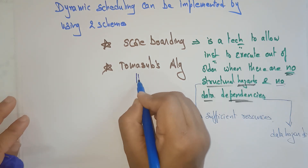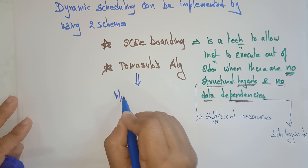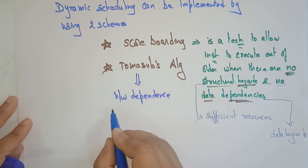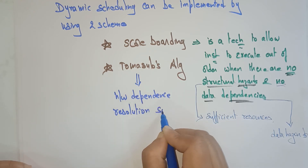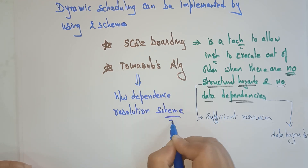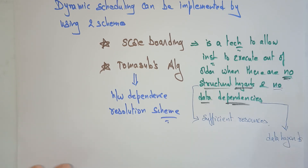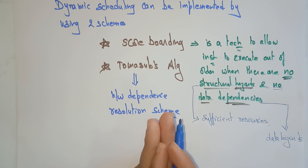What about Tomasulo's algorithm? Tomasulo's algorithm is a hardware dependency resolution scheme. These are the two different techniques that can be implemented for dynamic scheduling.